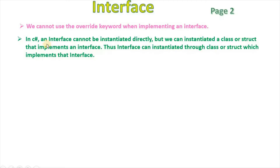In C#, an interface cannot be instantiated directly. But we can instantiate a class or struct that implements an interface. Thus an interface can be instantiated through the class or struct which implements that interface.